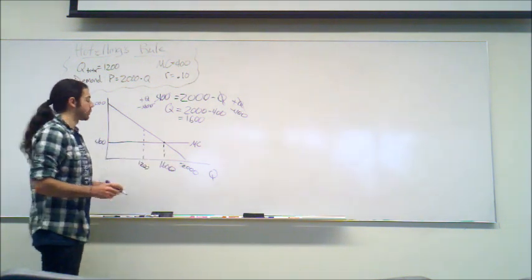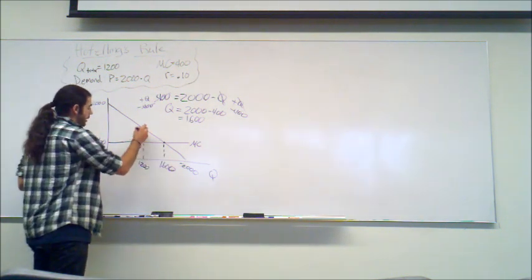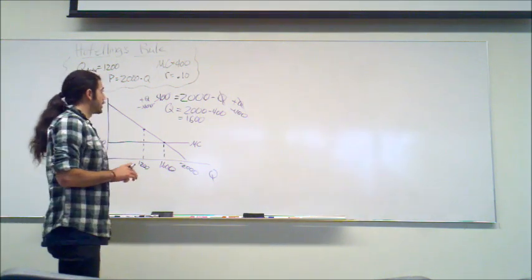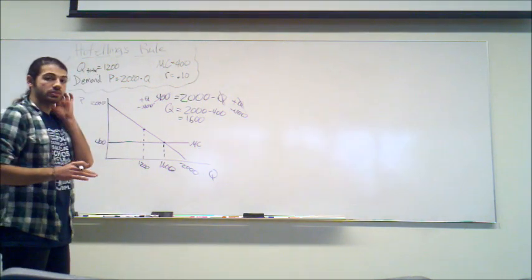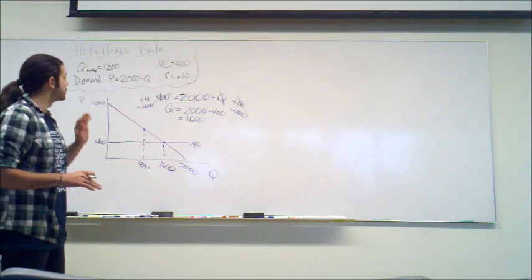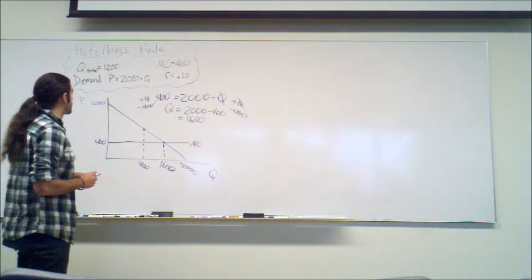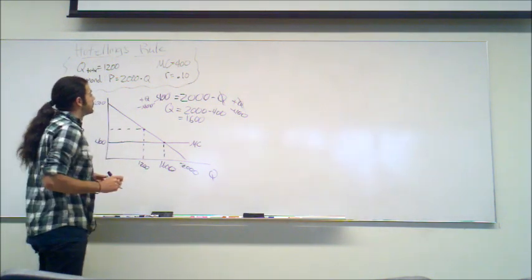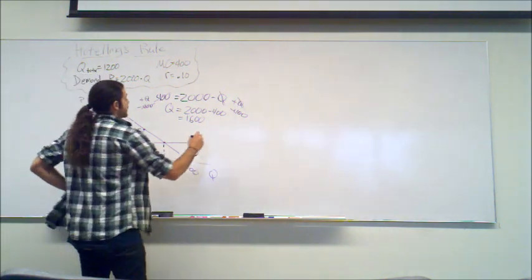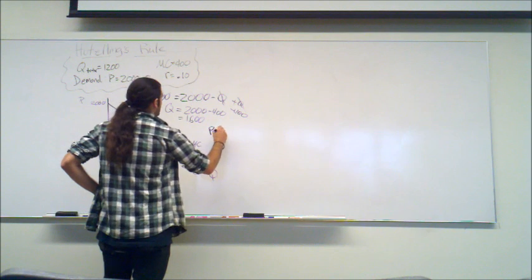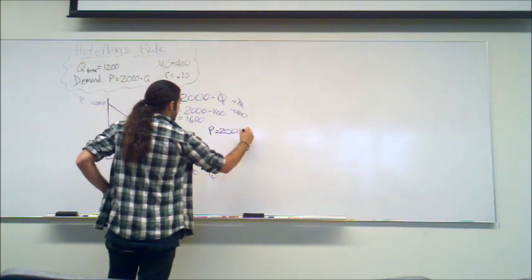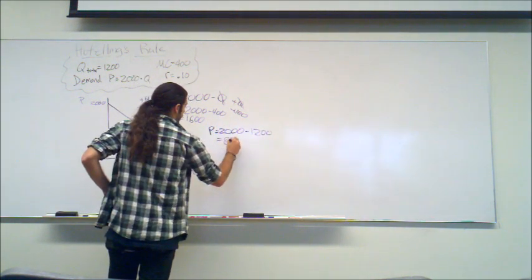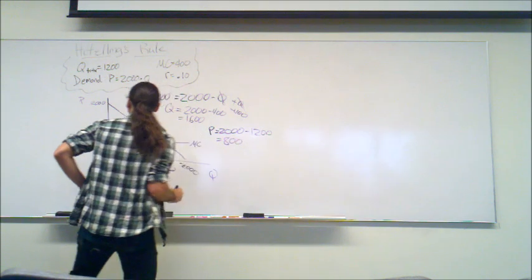So in a one-time-period situation, we would extract 1,200 units of Q, and the price would be P equals 2,000 minus Q, which is 1,200. Our price would be $800.